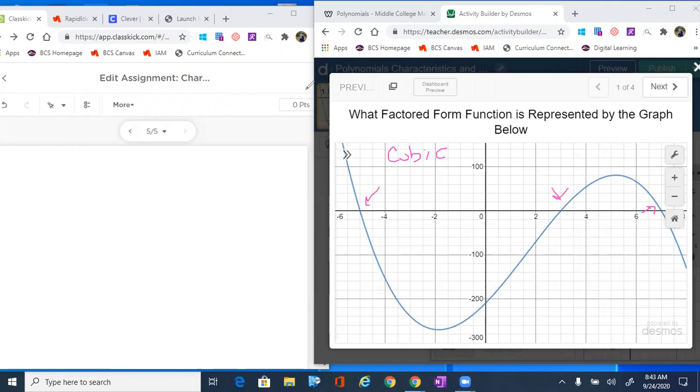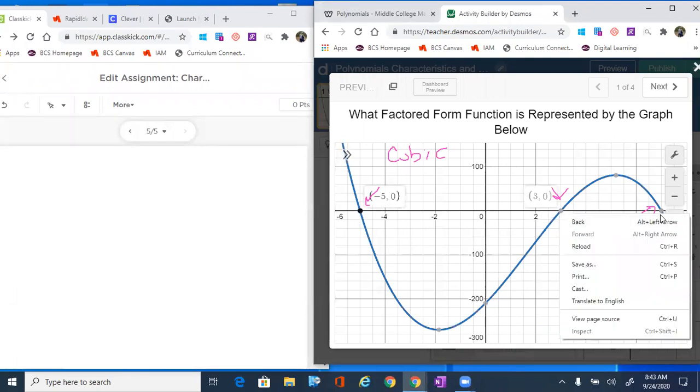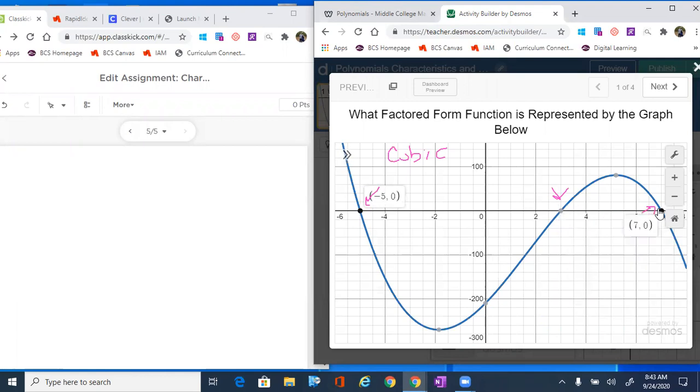So number one, we start by finding those zeros, or x-intercepts, and if you see, negative five, three, and seven. So I'm gonna write negative five, three, and seven.